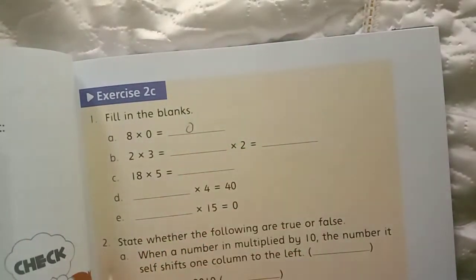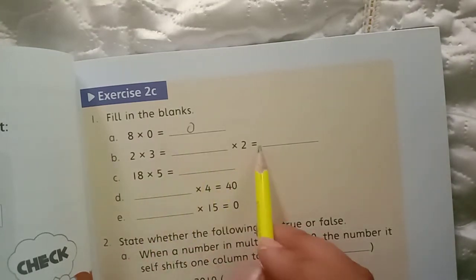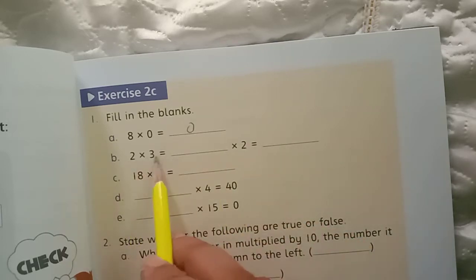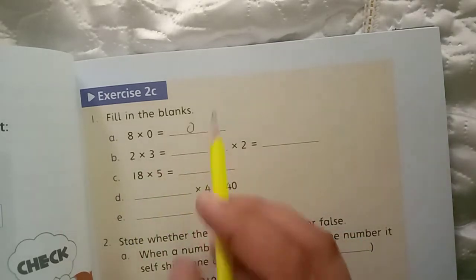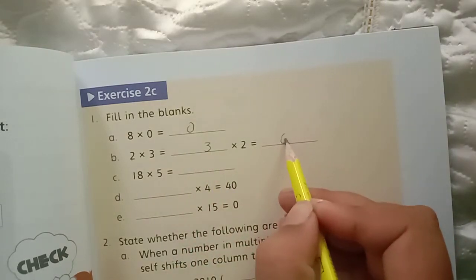Now look, this is 6, this is the equal sign showing that the two sides are equal. So 2×3=6. So 2 will multiply 3 to get 6. This will be the answer here.